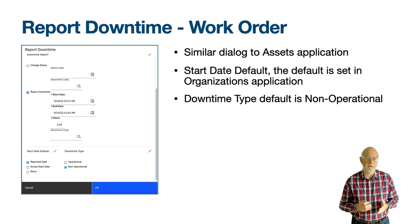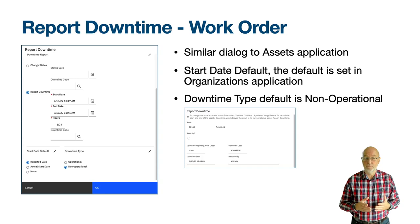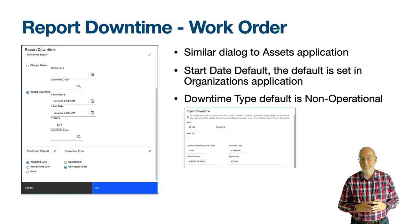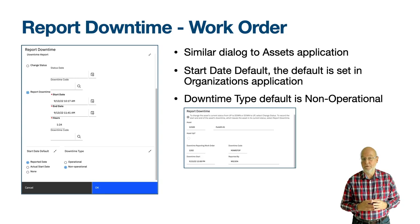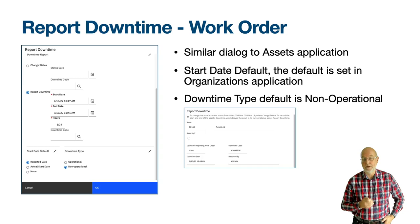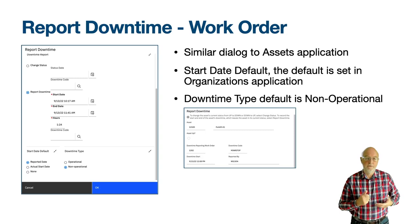When you choose Change Status and then return to the Report Downtime action to bring the asset back to an Is Running state of Up, there will be a few additional fields in the header of the dialogue to indicate the work order, the downtime start date and time, downtime code and who originally reported that the asset was down. The Report Downtime action functions in the same way as for the Assets application except when using the Report Downtime radio button — you can copy either the reported date or the actual start date to the start date field using the radio button in the start date default section. None simply blanks the start date. The start date defaults to the reported date and the end date to date and time now, so often when the dialog opens you'll see the hours already calculated.